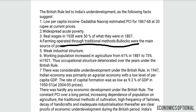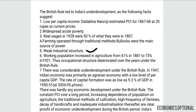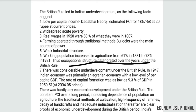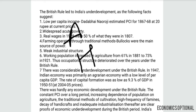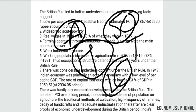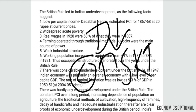Farming operated through traditional methods — bullocks were the main source of power, meaning there was no upgradation in the agriculture sector. Weak industrial structure: the working population in agriculture increased from 61% in 1881 to 71% in 1921. The occupational structure deteriorated over the years under British rule. Handicrafts, small cottage industries, village industries like textiles were all deteriorated after British rule. Cotton and silk were in great demand, but after the British came, they were destroyed.